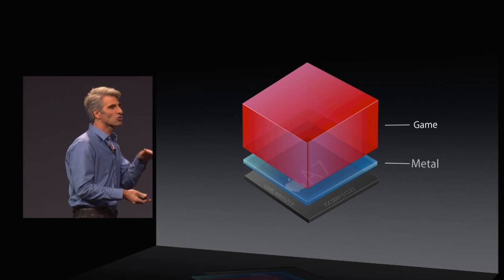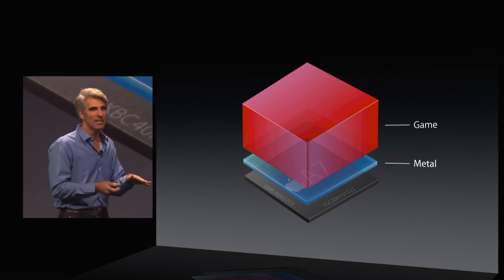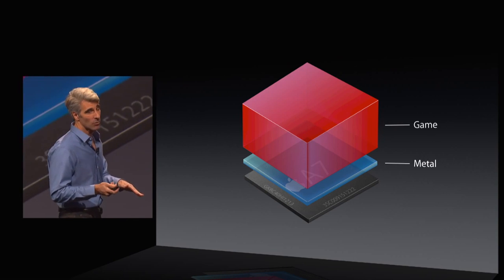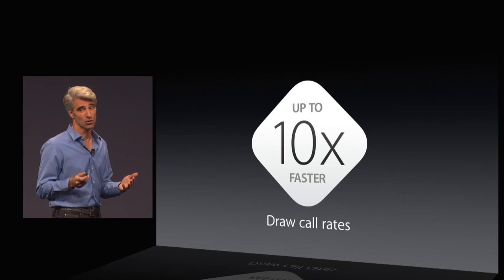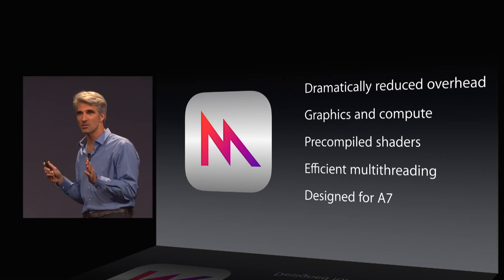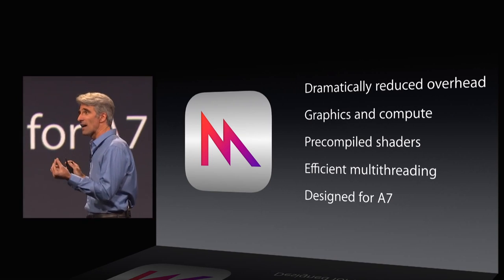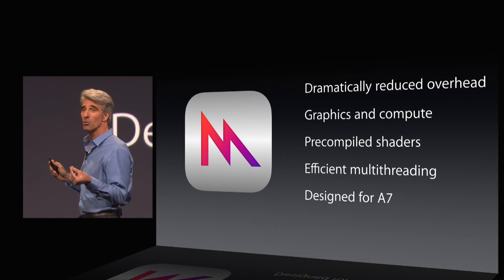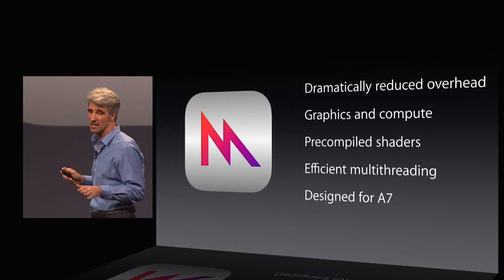Now we have Metal, and Metal dramatically reduces that overhead, giving the game near bare-to-the-metal access to the power of A7. The results are stunning — up to 10x faster draw call rates. In addition to these dramatically reduced overheads, you get access not just to graphics, but to the compute power of the GPU. Metal supports pre-compiled shaders and efficient multi-threading, so you can always get the most out of the processor.